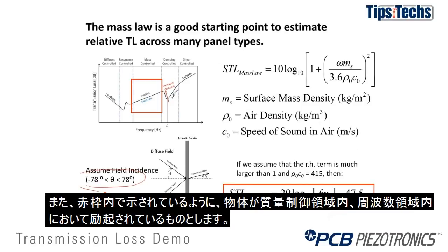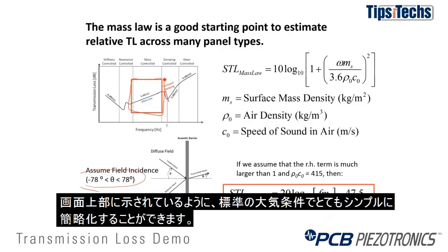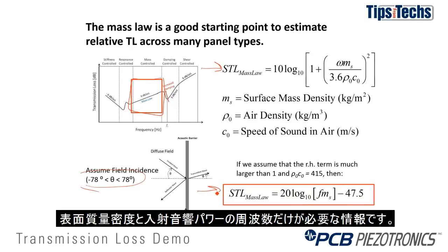It also assumes that the panel is being excited in its mass-controlled frequency region, shown by the red box here. Our mass law is shown at the top of this slide, and after we simplify for standard atmospheric conditions it becomes very simple. All you need to know is the surface mass density and the frequency of the incident sound.